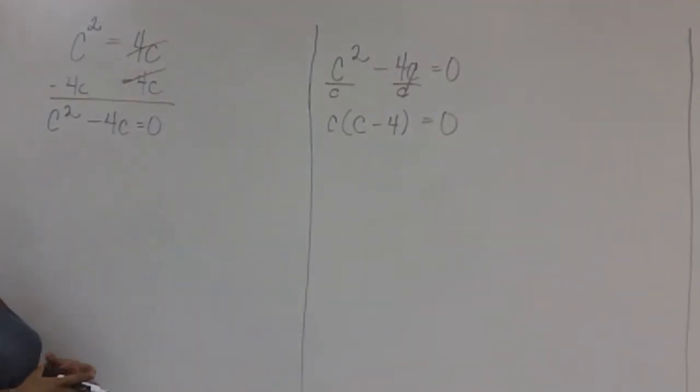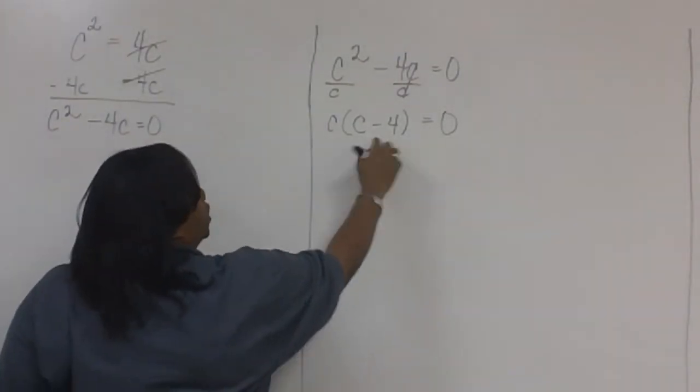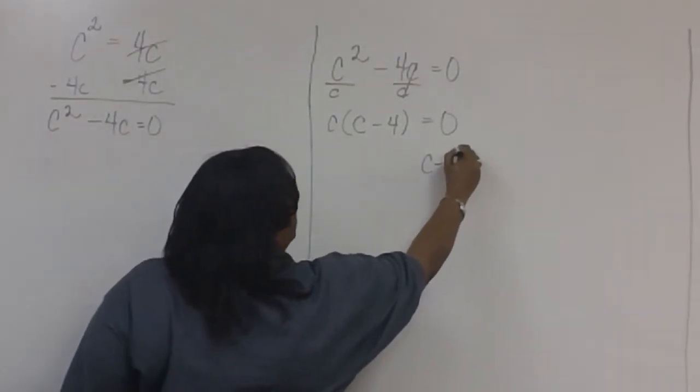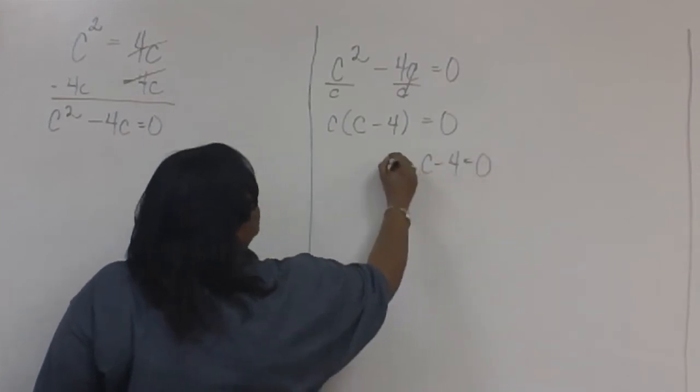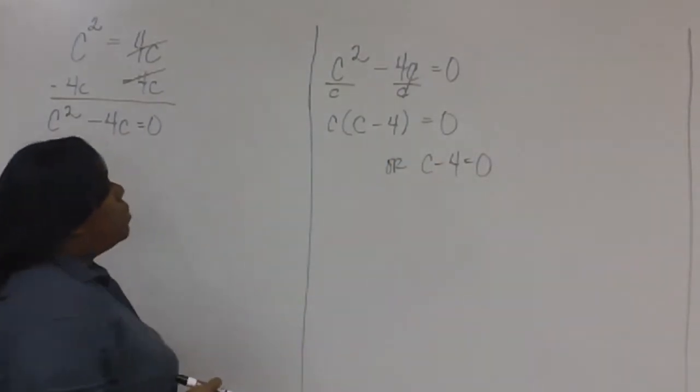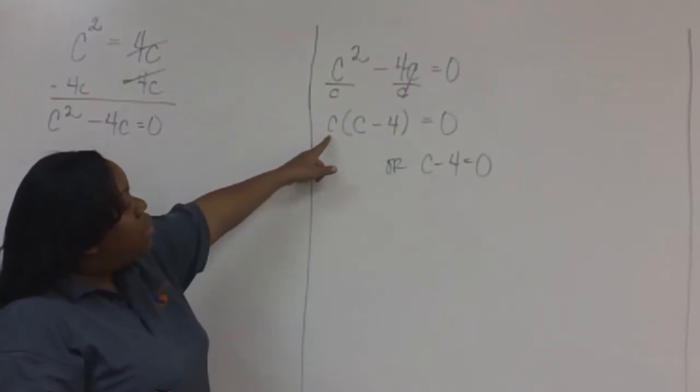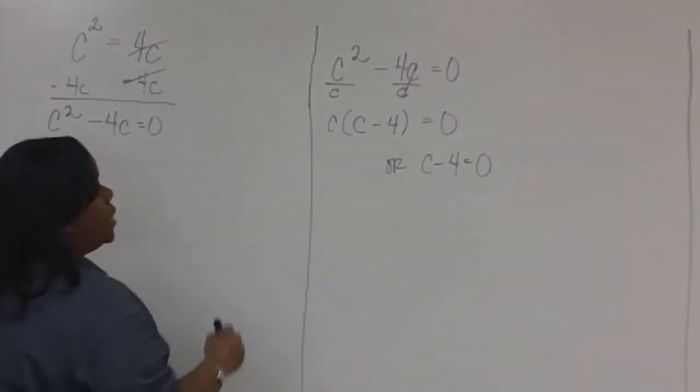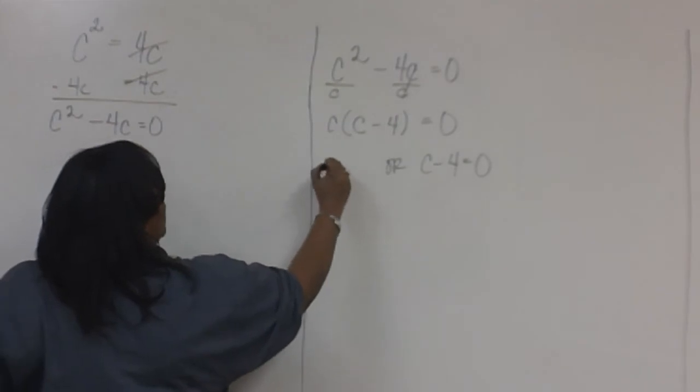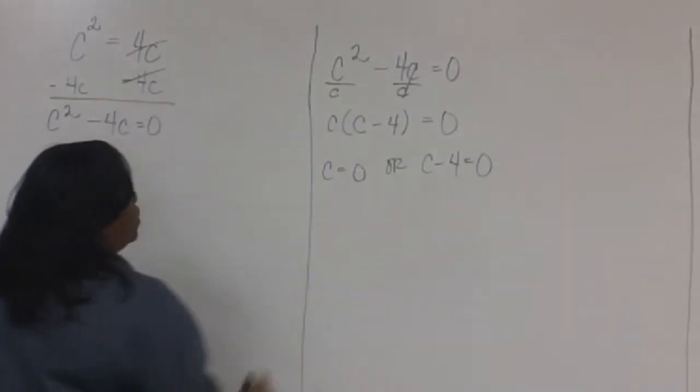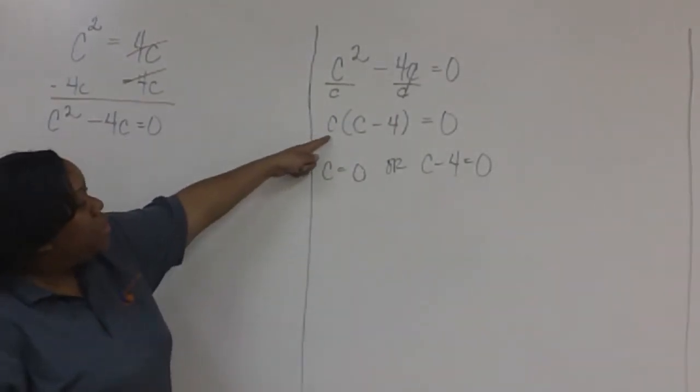Now we're ready to write our equations. One equation is C minus 4 equals zero. But notice that there's a variable in the GCF. Whenever the GCF contains a variable, we need to write an equation for that GCF. So the other equation is C equals zero, and it comes from this GCF.